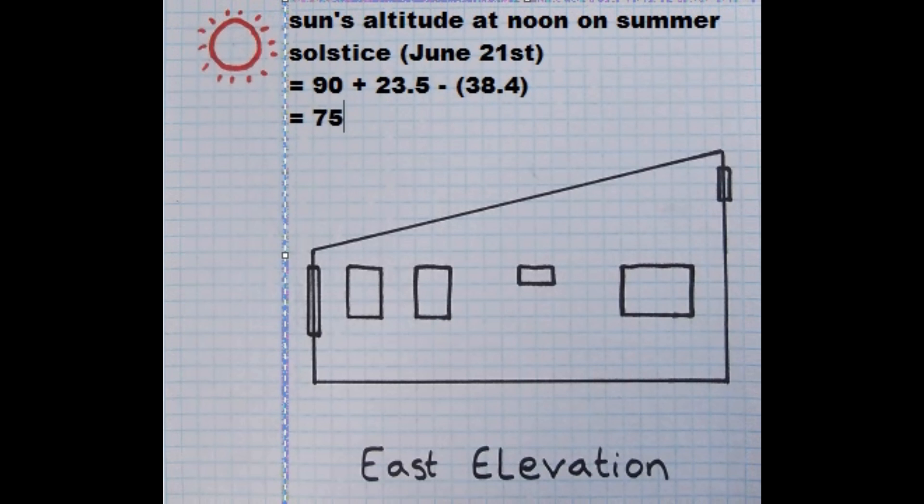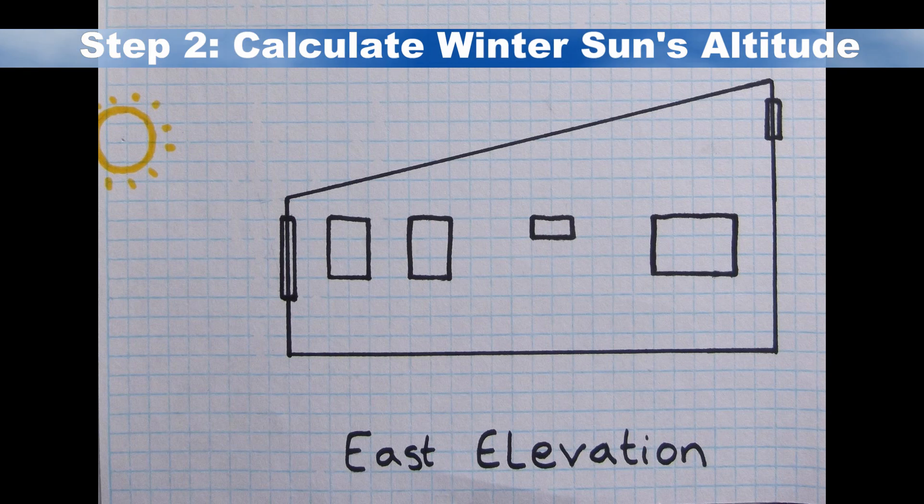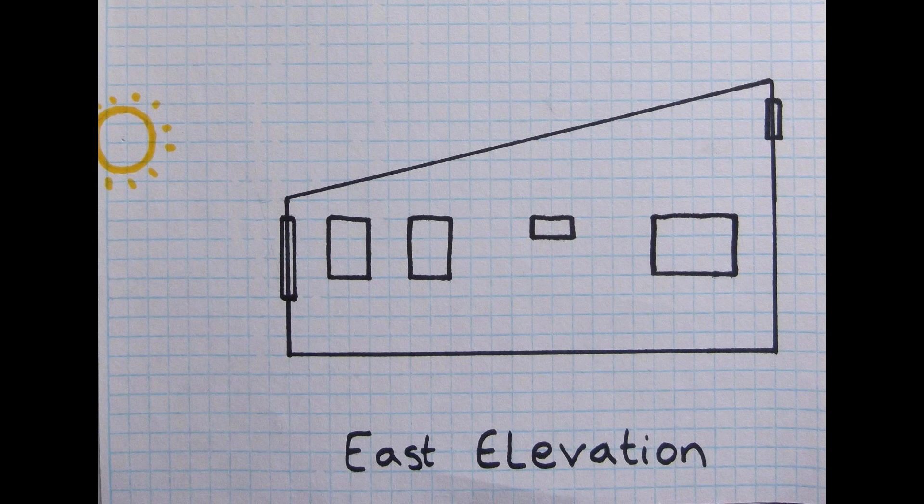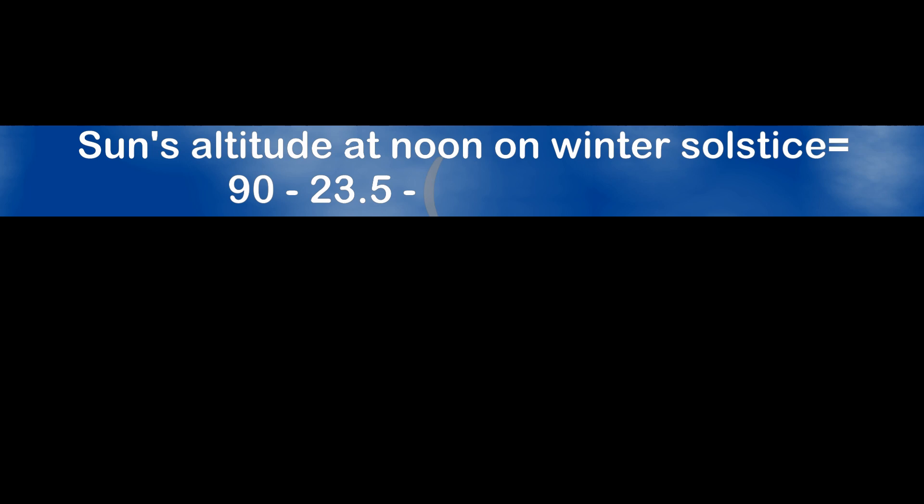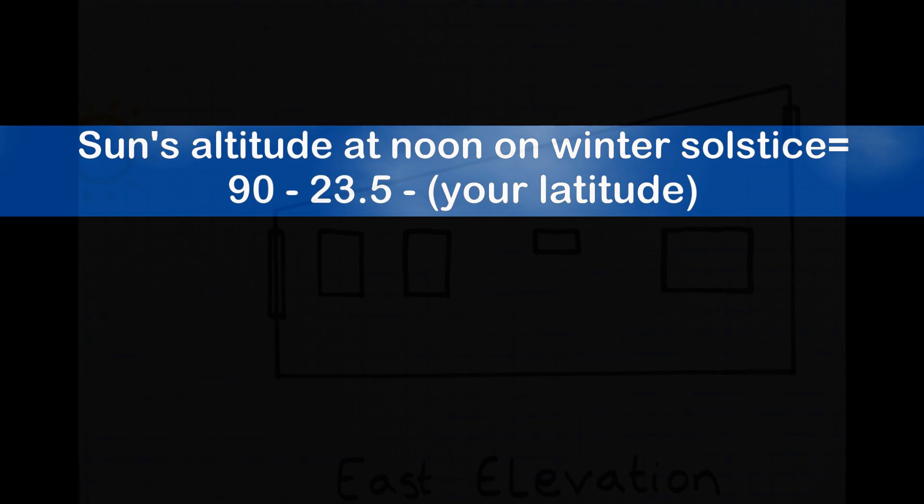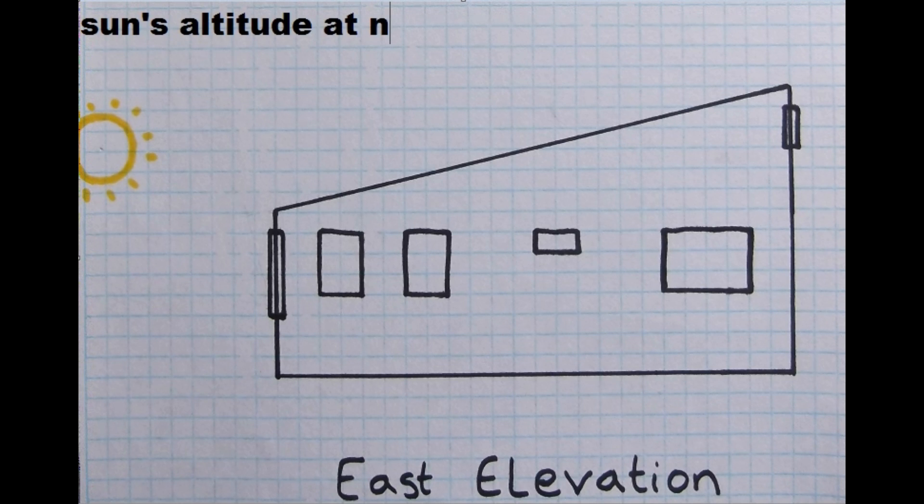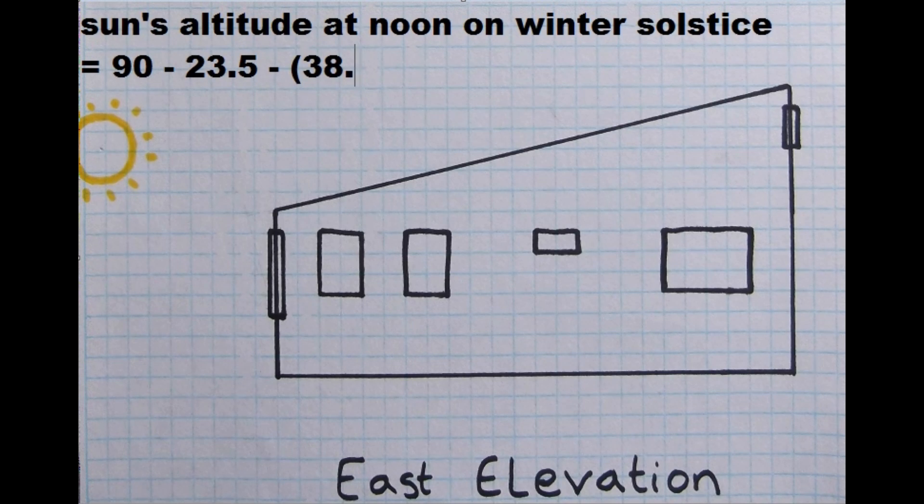The sun reaches its lowest maximum height in the sky around noon on the winter solstice, the shortest day of the year, December 21st. To calculate the sun's altitude on the winter solstice for your location, you can use the following equation. The sun's altitude at noon on the winter solstice is equal to 90 minus 23.5 minus your latitude. We already know the latitude for our location, so we can go ahead and plug it in. The sun's altitude at noon on winter solstice is equal to 90 minus 23.5 minus 38.4, which gives us 28.1 degrees.